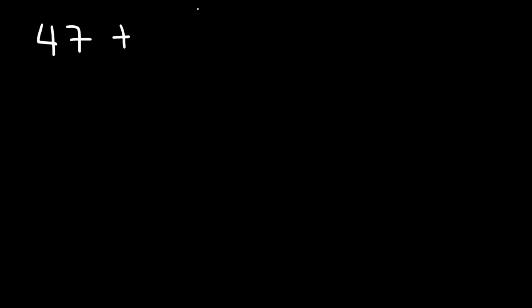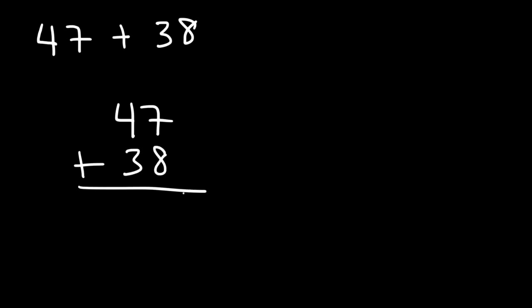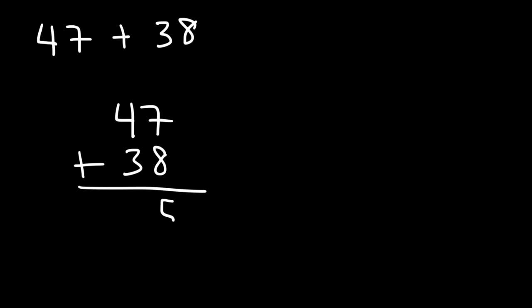Now what if you have an example like 47 plus 38? Try that example. So what is 8 plus 7? It's 15, which is greater than 10. When you get something larger than 10, you don't write 15 — you write the 5 in the ones place and carry the 1 to the next column. Then you add 1 plus 4, which is 5, and 5 plus 3 is 8. So the answer is 85.